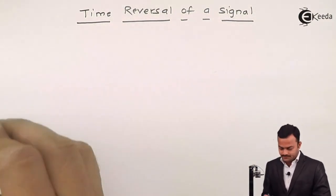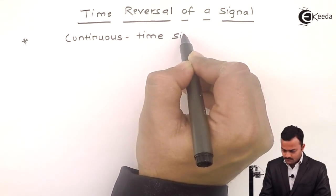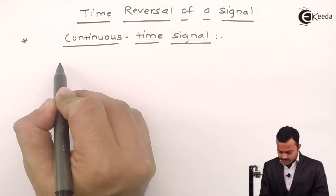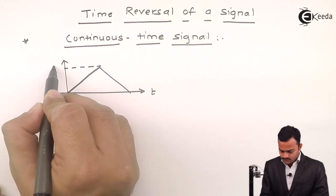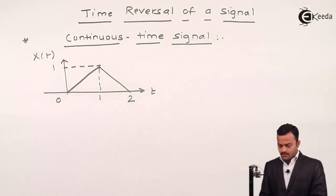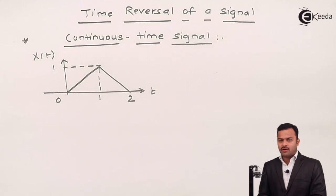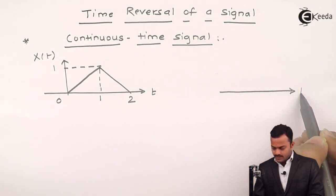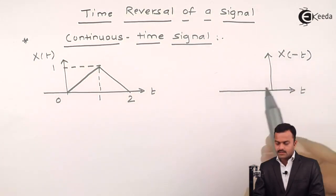Let's consider a continuous time signal, which is represented by this. This is the original signal. What we are doing, we are taking mirror image of this, which we call as time reversal, so that we will get a signal like this, which we call as x of minus t.